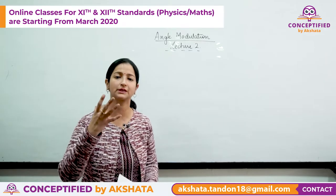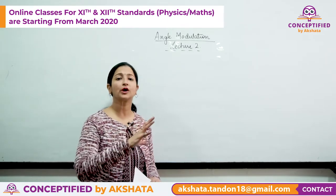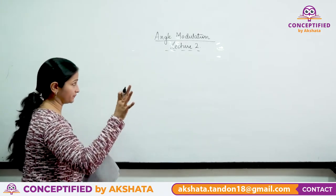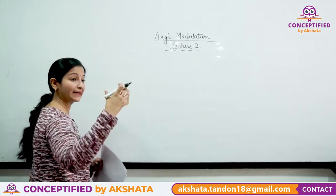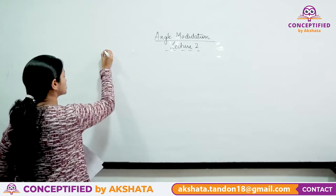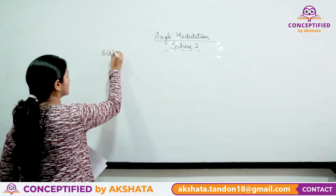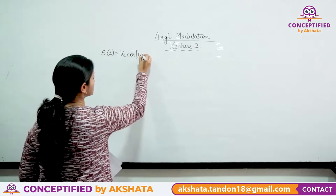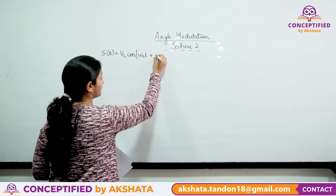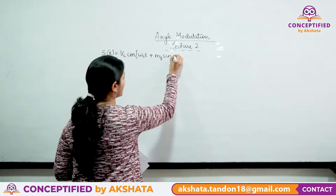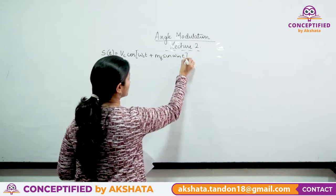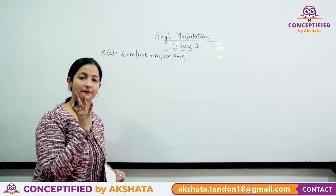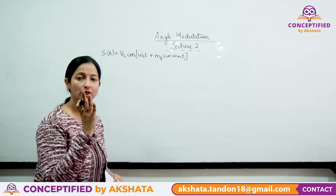We have equations for phase modulation and frequency modulation. The final equation we got was: S(t) = Vc·cos(ωc·t + mf·sin(ωm·t)). This includes the concepts of frequency deviation and modulation index.